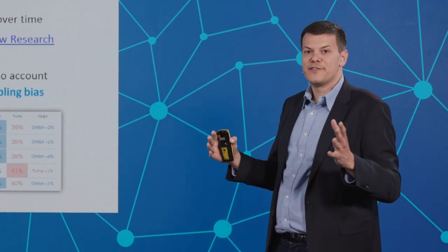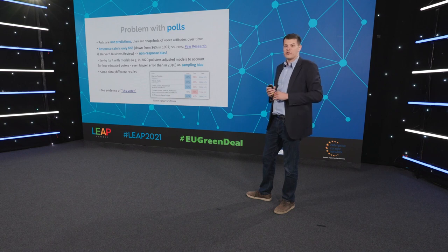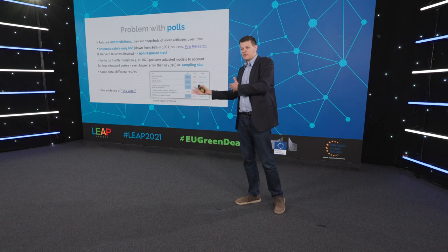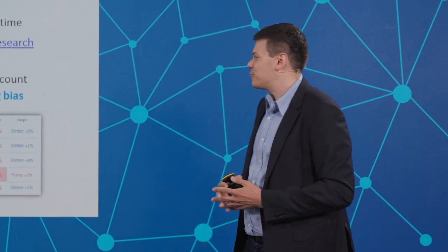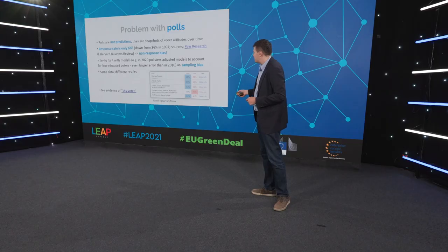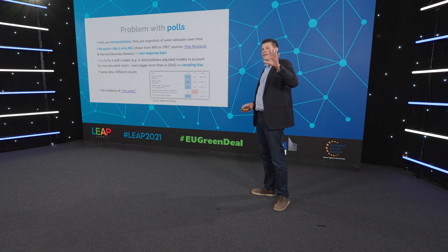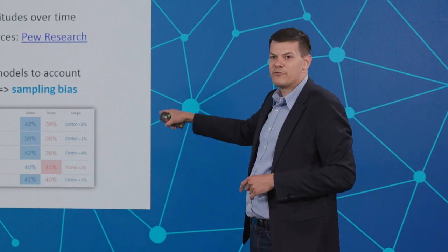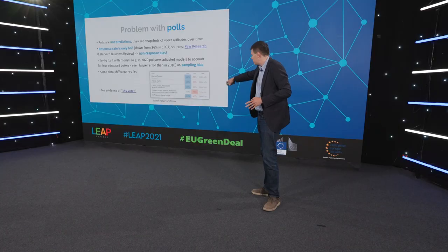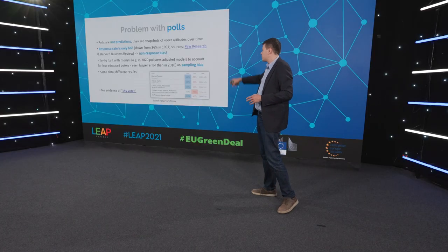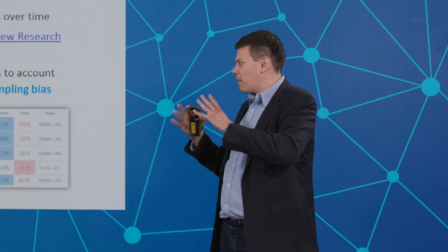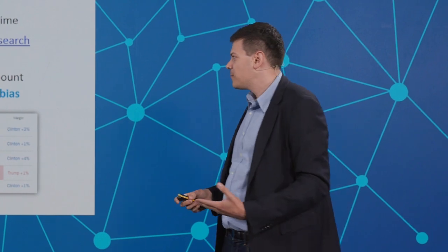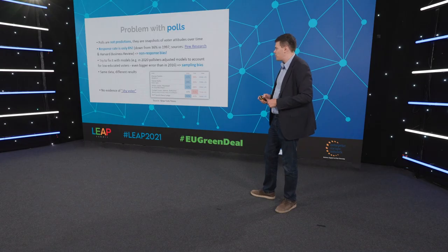In 2020, they adjusted their models by including non-educated or low-educated voters, saying they made the misses in 2016 because they didn't include low-educated voters. They did include them in 2020, and their error was even bigger in 2020 than in 2016. This is illustrated by an example from the New York Times from 2016: they commissioned a survey and gave the data to five different pollsters. Five different pollsters gave five different responses on the same data set, ranging from a Trump victory to a Clinton victory to several different levels of Clinton victories. They're using different models, and the precision of your model determines the precision of the survey. But what we're saying is forget the models — we need to completely rethink the way this is being done, which is what we've done.